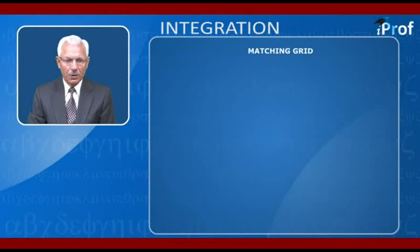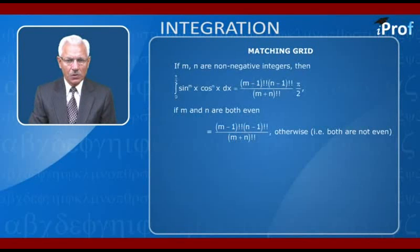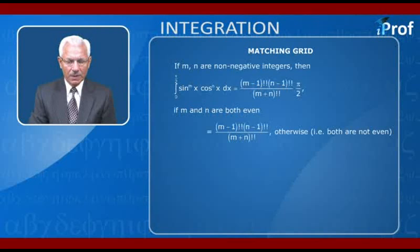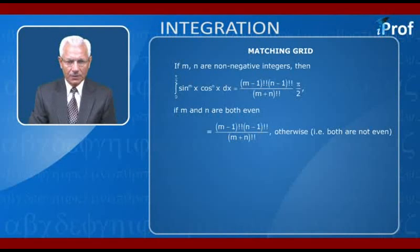We have the following result: if m and n are non-negative integers, then the integral from 0 to π/2 of sin^m(x) · cos^n(x) dx equals (m−1)!! · (n−1)!! / (m+n)!! · π/2, if m and n are both even; and equals (m−1)!! · (n−1)!! / (m+n)!!, otherwise — that means for all remaining cases when both m and n are not even.